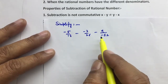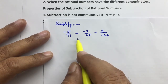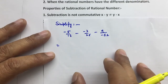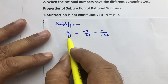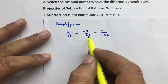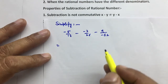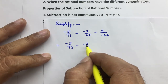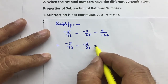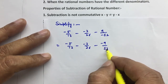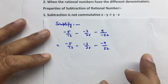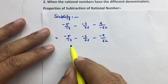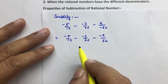Next question: Simplify. Hamare paas teen rational numbers hain. Check karna hain ki tinohu rational numbers standard form mein hain ya nahin. First standard form mein hain, second bhi standard form mein hain, lekin third jo hain woh standard form mein nahin hain. Toh isko standard form mein likhenge: minus five upon thirty, minus minus three upon twenty-six, aur ye negative sign nine ke saath lag jayega — minus nine upon fifty-two. Ab tinohu standard form mein hain. Ab check karo: kya tinohu ke denominators same hain? No — tinohu ke denominators different hain.